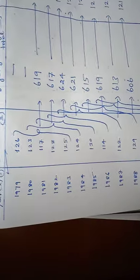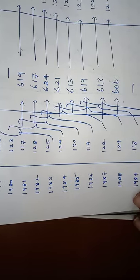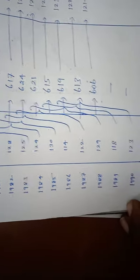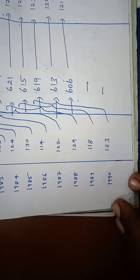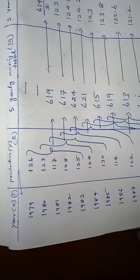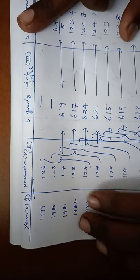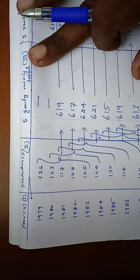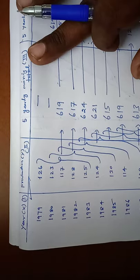In the first column, we write the corresponding years from 1979 to 1990. The second column contains the production values: 126, 123, and so on, up to 123.